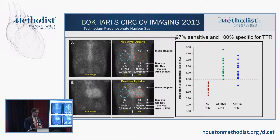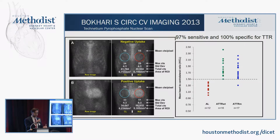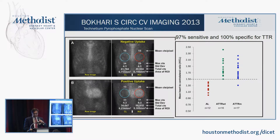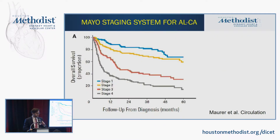The technetium pyrophosphate scan is a noninvasive nuclear scan that looks at heart-to-mediastinal uptake. A ratio greater than 1.5 is 97% sensitive and 100% specific for transthyretin amyloid — it will not diagnose AL amyloid. This is especially useful for elderly senile TTR amyloid patients whom you wouldn't take for a biopsy, and it can help confirm amyloid and guide treatment context.